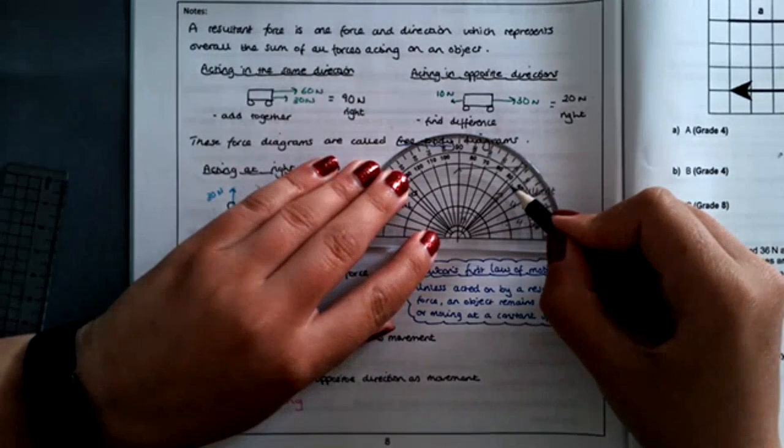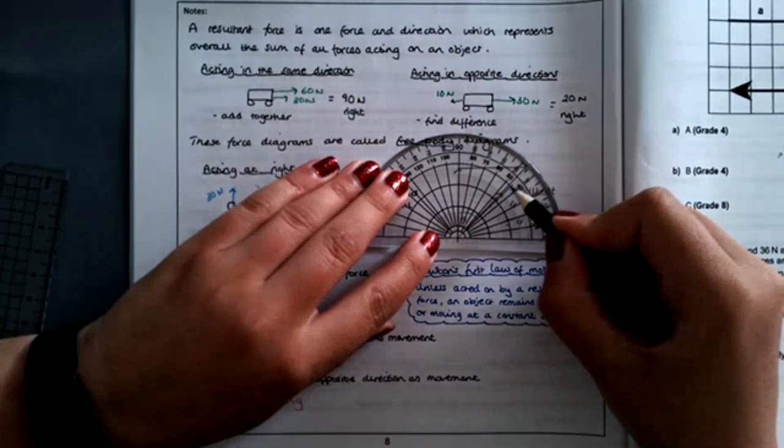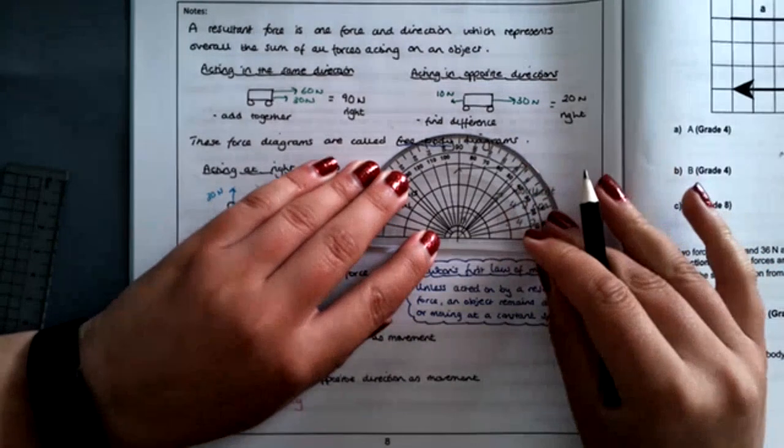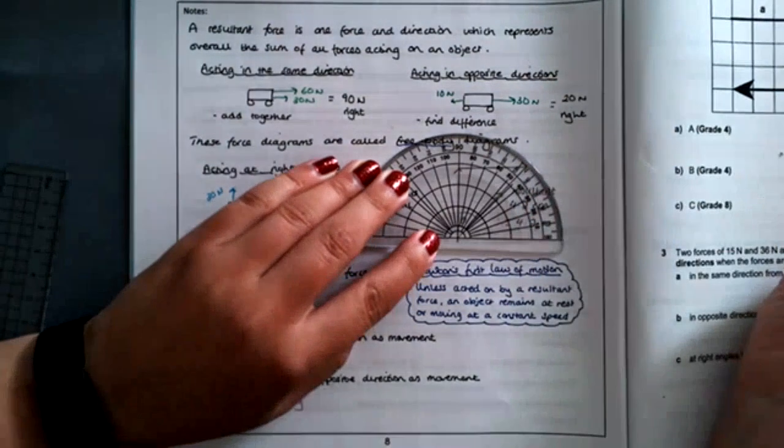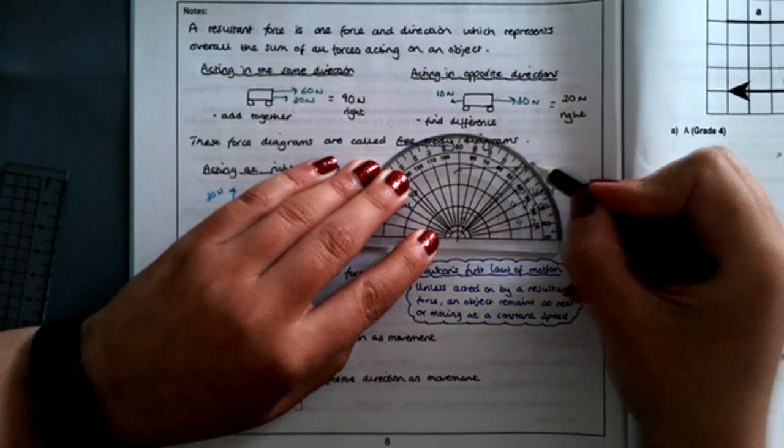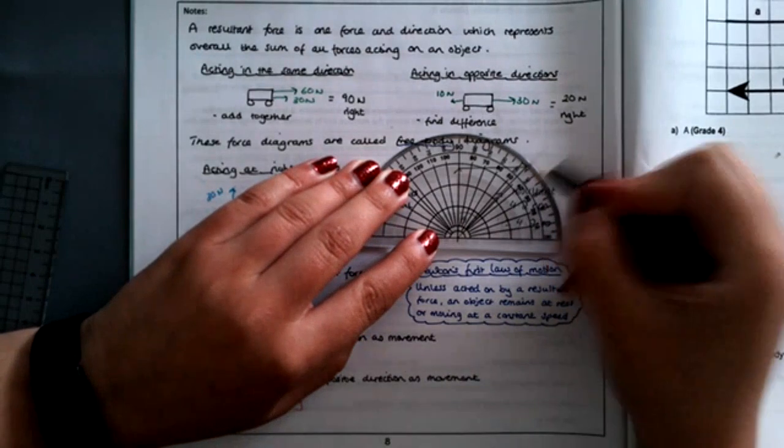Now mine is slightly off. Of course, you do get a margin of error that you can use. Mark schemes don't always say it has to be 45 and that's it. I'm actually getting 43 rather than 45.